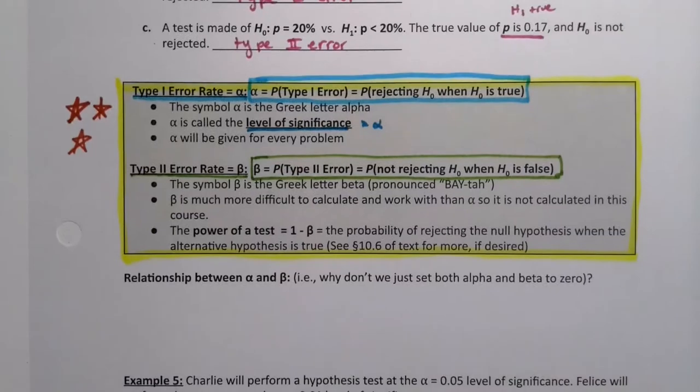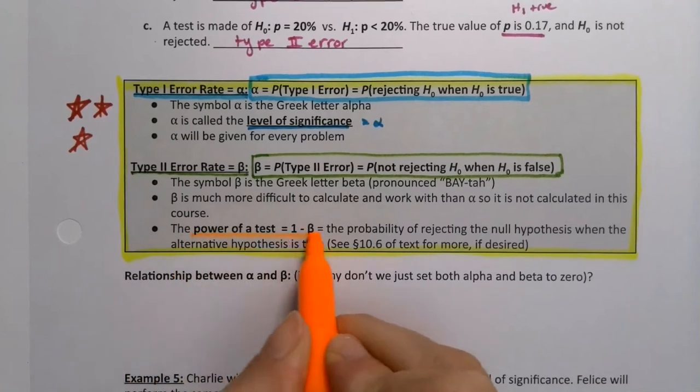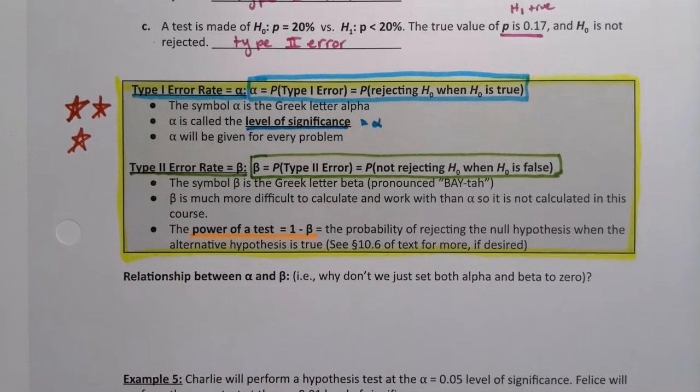And there's one other thing if you've ever heard of the power of a test which you may hear about in later courses. They'll talk about the power of a test. So that's 1 - β. It's the probability of rejecting the null hypothesis when the alternative hypothesis is true. If you're interested in that you can look up section 10.6 in the online textbook. You will actually hear that in medical terms. They'll say the power of this flu test is blah blah blah, and it does have important context.